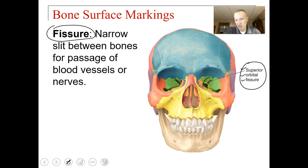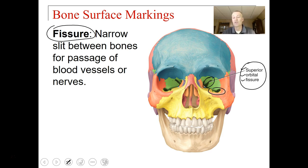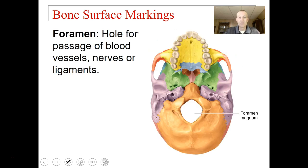You can see this little narrow slit — that's the superior orbital fissure. Down here is the inferior orbital fissure. These little slits are where blood vessels or nerves pass from the brain or behind the skull to the front of the face, for example toward the eyes or facial tissues. A foramen is a hole for the passage of blood vessels, nerves, or ligaments through the bones.